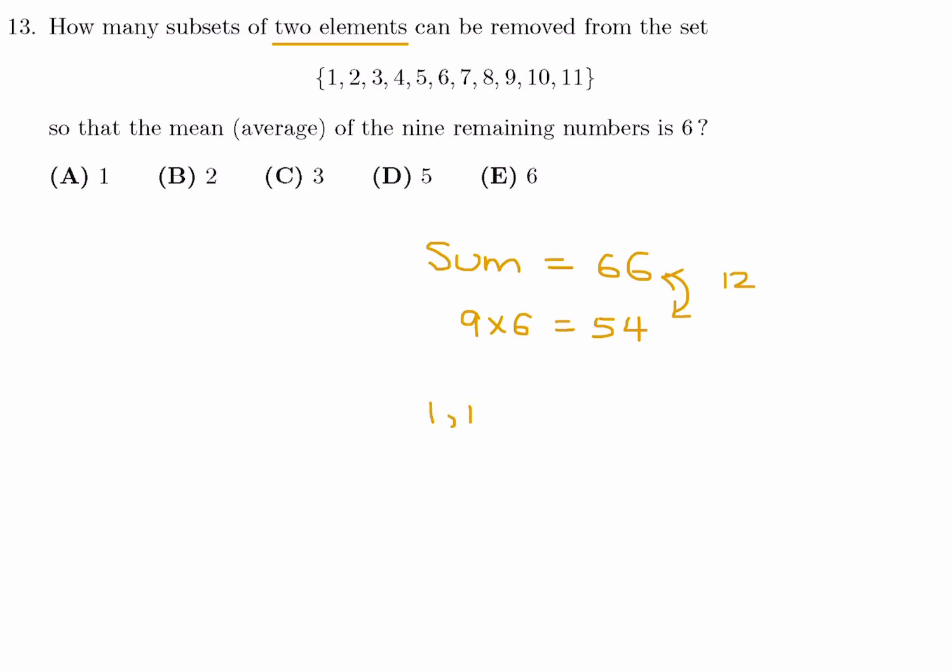1 and 11, 2 and 10, 3 and 9, 4 and 8, 5 and 7, and I think that's it. So these are the five subsets that we can remove in order to meet the criteria of the question. So number 13, the answer is D.